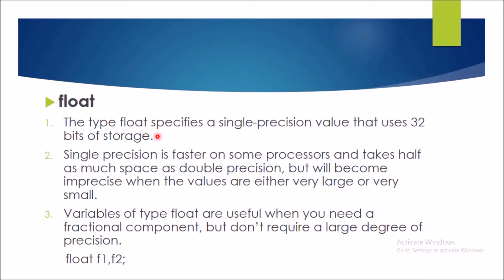So, if the float is considered, then the float can give you 32 bits of storage. And it is single precision. Therefore, it is faster to be accessed. So, variable type float are used when you need a fractional component but don't require large degree of precision. For example, if any research is going to be carried out, suppose in defense sector mainly, if you don't require a large degree of precision, then you will use float.